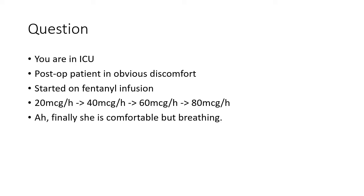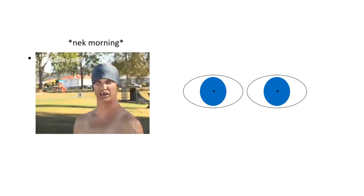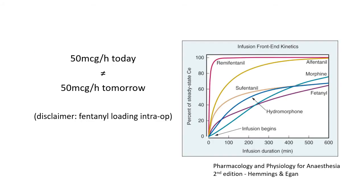You've titrated your drug carefully and so now you've gotten it just right. The next morning, the patient is not breathing and her eyes look like this. What has gone wrong? A cursory look at this graph from Hemmings and Egan demonstrates that the time taken for a drug infusion to reach steady state varies enormously depending upon the drug.